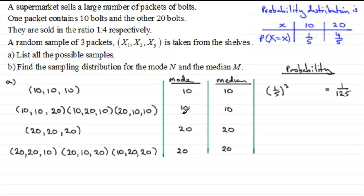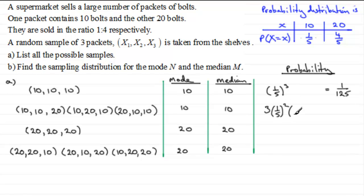For the three samples with two 10s and one 20, giving a mode or median of 10, each has probability one fifth squared times four fifths. There are three such samples, so the combined probability is 3 × (1/5)² × (4/5), which equals 12/125.